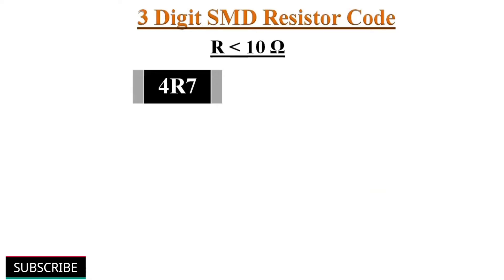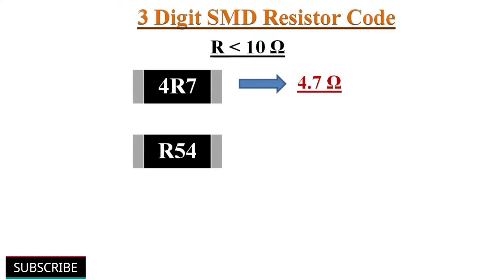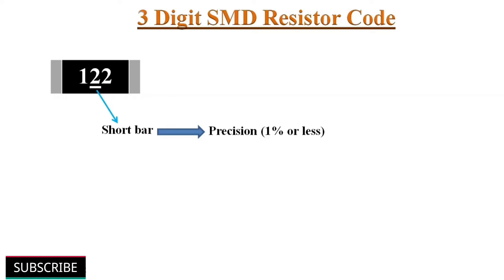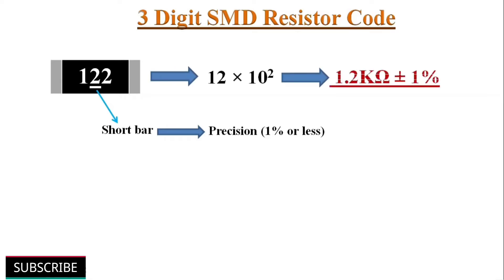Sometimes in the 3-digit coding system, the letter R is used to indicate the position of a decimal point, for resistance values less than 10 ohms. For example, the code 4R7 means the resistance value is 4.7 ohms. Likewise, the code R54 gives 0.54 ohms. If there is a short bar below the 3-digit code, this denotes the resistor has a tolerance of plus or minus 1% or less. For example, a code of 122 with a short bar below gives 1.2 kilo ohms with plus or minus 1% tolerance.